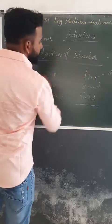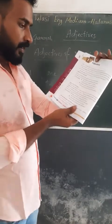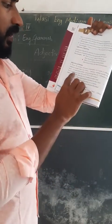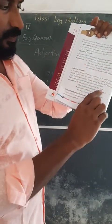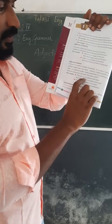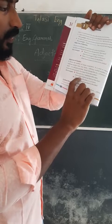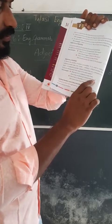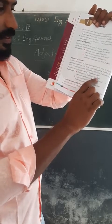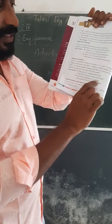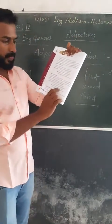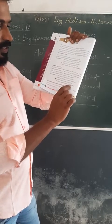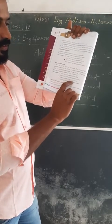'Many,' 'few,' and 'several' also come under adjectives of number. They answer the question 'how many.' For example: 'There are 30 students in this class' — 30 is a cardinal number. 'I have been to Mumbai several times' — 'several' is the adjective of number. How many times? Several times.